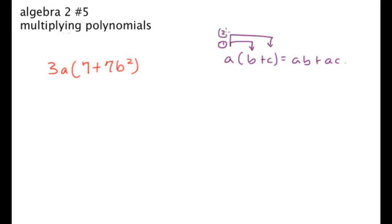So that's first, and that comes second. So we're gonna do that here, we're just gonna have 3A times 7 first, and that's 21A, and then have the plus sign, and then 3 times 7B squared, 21 again, but now we have an AB squared. Pretty simple.